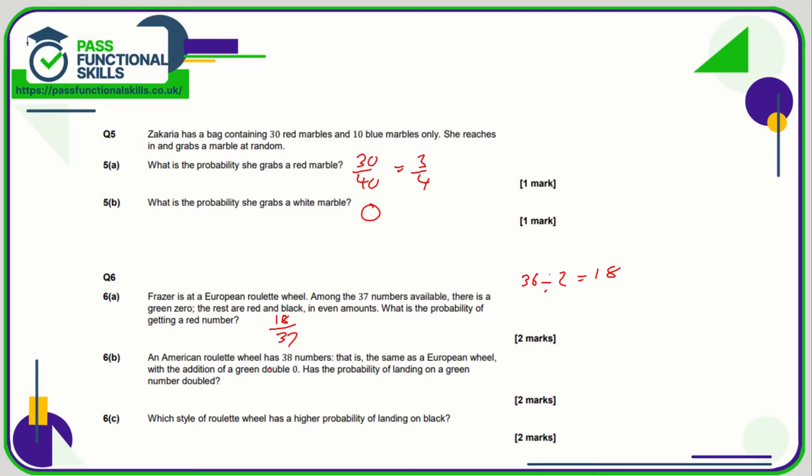6b: An American roulette wheel has 38 numbers, so it's got an extra green one which is the double zero. So has the probability of landing on a green doubled?